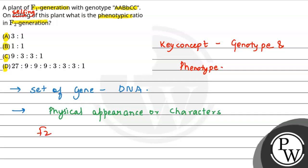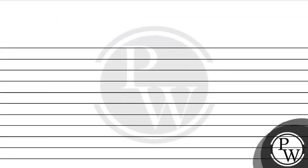We have to determine the phenotypic ratio in the F2 generation when we self our F1 plant, which has genotype capital A capital A, capital B small b, capital C capital C. We understand how to segregate during meiosis and recombination. Gene A (AA) is homozygous dominant, gene B (Bb) is heterozygous, and gene C (CC) is homozygous dominant.